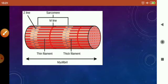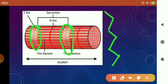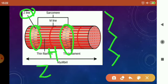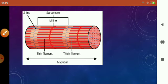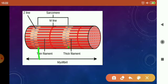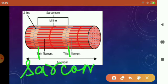There is also a Z line — a zigzag line of thin filament where only thin filament is present. There is also a zone where only thick filament is present, called the H zone, and that line is called the M line. The distance between two Z lines is called the sarcomere.